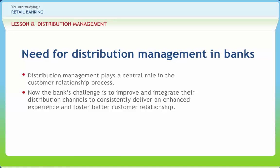For most banks, the branch presently dominates the distribution approach, while other methods of interaction such as direct channels and alternative face-to-face outlets are less significant and not well integrated. But this situation appears to be changing rapidly. Researchers have identified six converging market dynamics which are creating an inflection point in the evolution of retail channels for banks.